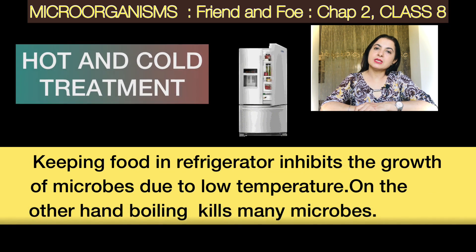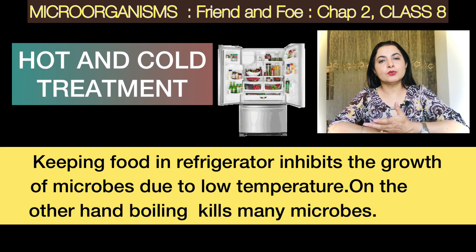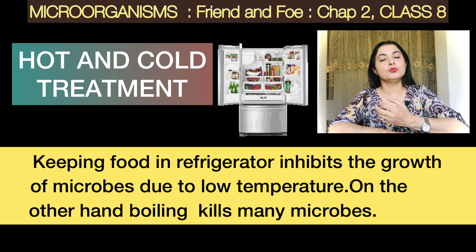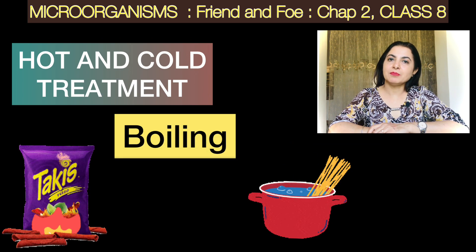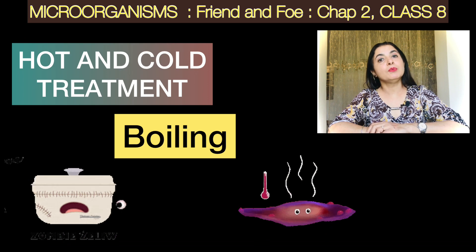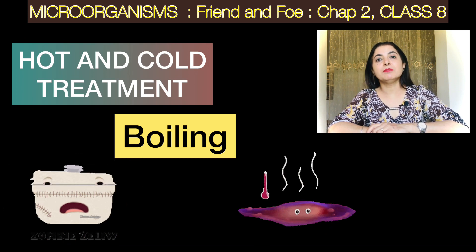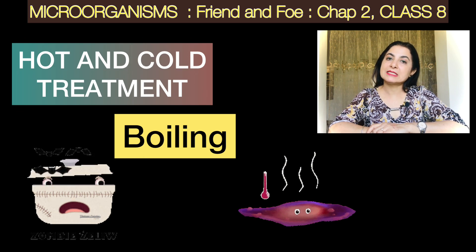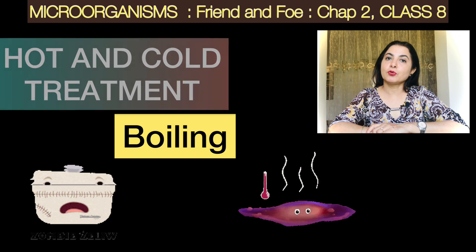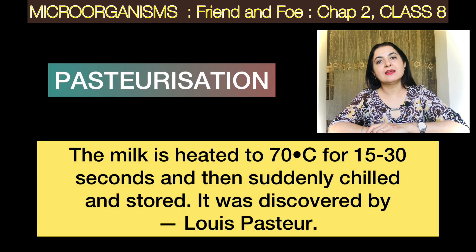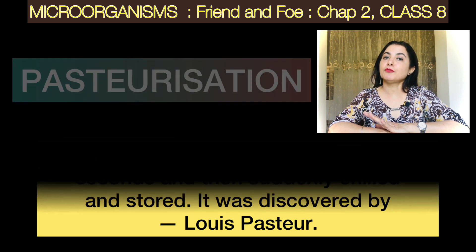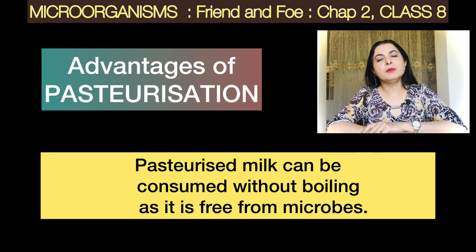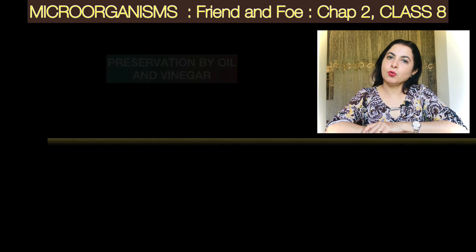Another method is hot and cold treatment. After cooking food, if you need to preserve it, you put it in the fridge. At cold temperatures, bacteria cannot survive. For the hot treatment, we boil milk because whatever bacteria or microorganisms are there in the milk will get killed. Another method is pasteurization — the milk is heated to 70 degrees centigrade, and this temperature is maintained for 15 to 30 seconds, after which bacteria cannot survive.